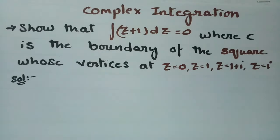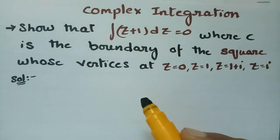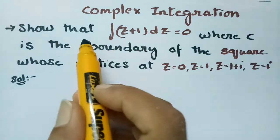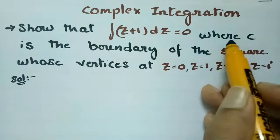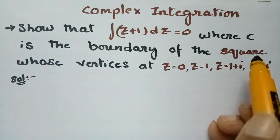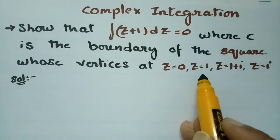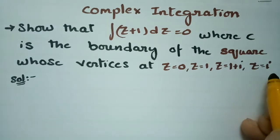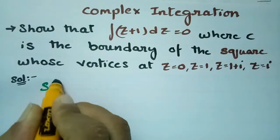This problem is from complex integration. In this video we have to show that the integral of (z+1) dz is equal to 0, where C is the boundary of the square whose vertices are z=0, z=1, z=1+i, and z=i.